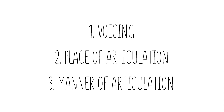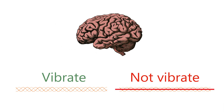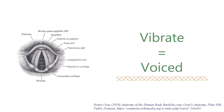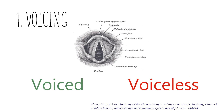For every consonant, there are three things we need to know in order to understand how articulation takes place. The first is voicing. Once the air gets into the laryngeal cavity, your brain needs to make a decision: do I vibrate the vocal folds or not? It's either yes or no — a binary decision. If you vibrate the vocal folds, the consonant is going to be voiced. If you let the air go through without any vibration, the consonant is voiceless.